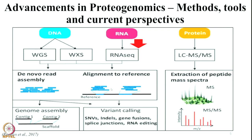After aligning the sequenced genes on the reference genome, we can understand two things: one is genome assembly, that is how the gene is assembled on the reference genome, and second is variant calling, which includes SNVs — single nucleotide variants — indels that are insertions and deletions, gene fusions, splice junctions, and RNA editing. We will be able to understand all these things if we use RNA-seq, WXS, or WGS.